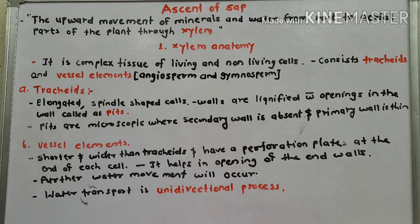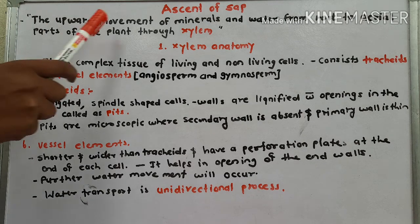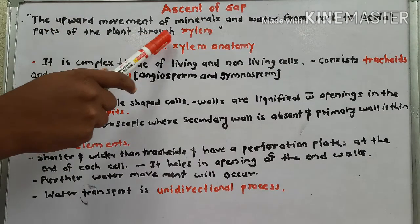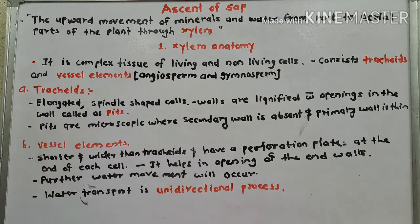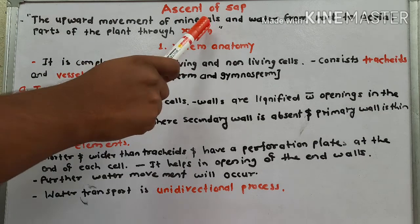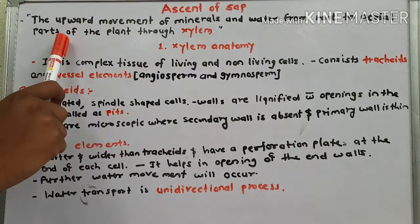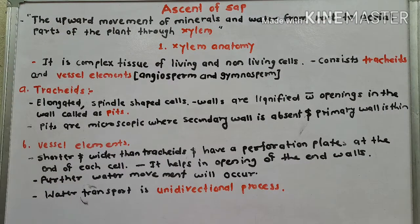In this video we are going to see the Ascent of Sap. The upward movement of minerals and water from roots to aerial parts of the plant through the xylem is known as Ascent of Sap. Water and minerals move from the roots to the aerial parts of the plant through xylem — this is known as Ascent of Sap.